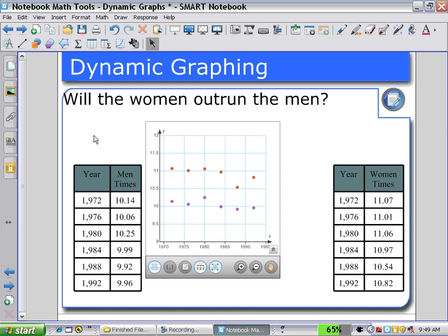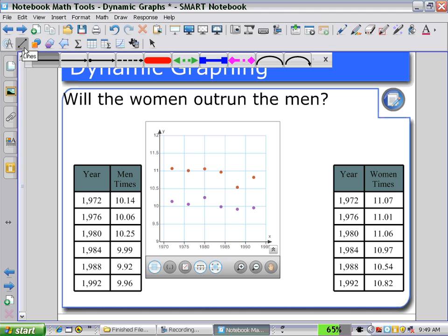Students can now enter into discussion. We could use lines of best fit. So, constructing a line through the points, we can show the trend for the women's times as decreasing. We can also show the trend for the men's times as also decreasing but at a slower rate.